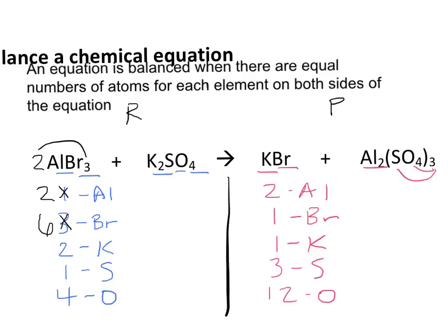Because of that, I'm going to actually put a six in front of this compound, so that I now have six Bromine atoms. And I also have to take note that that changed my number of Potassium atoms from one to six.